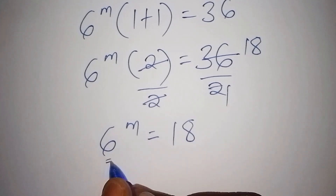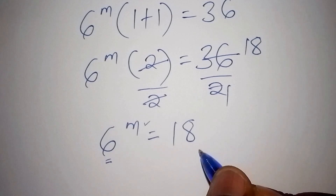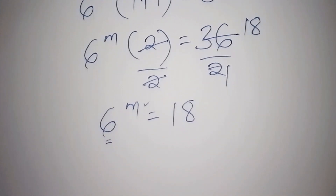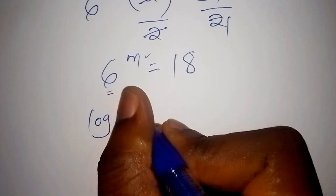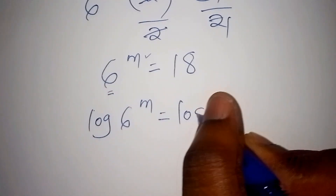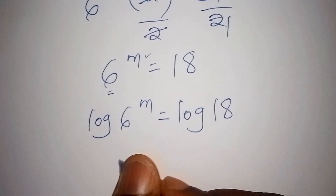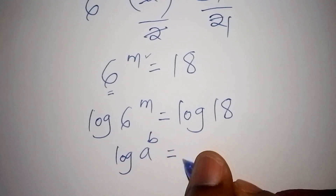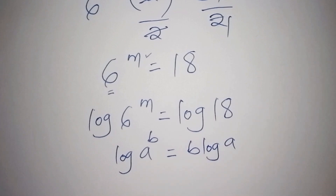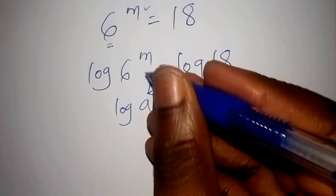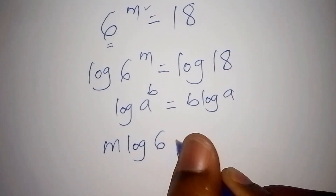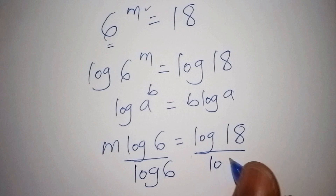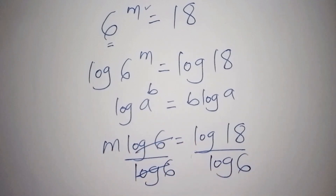Since we have 6 as the base, m as the index, and 18 as the result, it is difficult to change 18 to the base of 6. So we shall introduce logs from both sides. We now have the log of 6 to the power of m is equals to the log of 18. Then the log of 6 and log of 6 on both sides will allow us to isolate m.